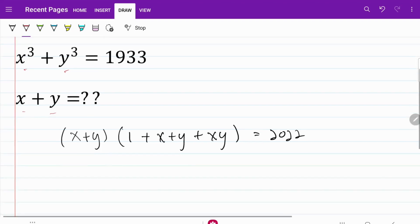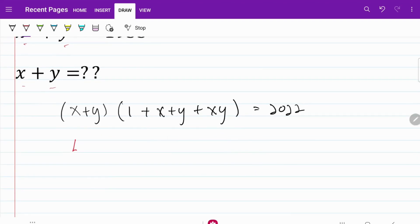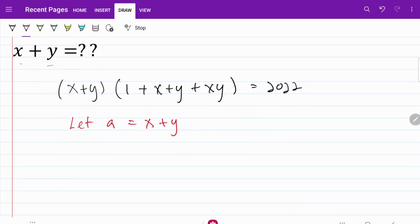To keep things simple, let's just go ahead and let a equal to x plus y. So now the left side of the equation becomes a multiplied by 1 plus a plus xy is equal to 2022.